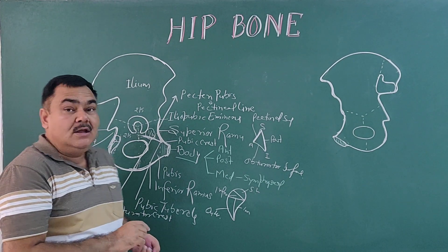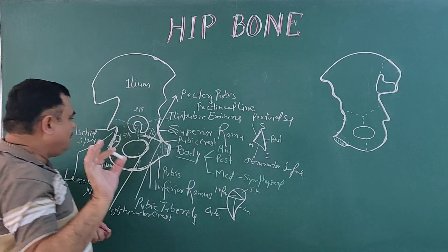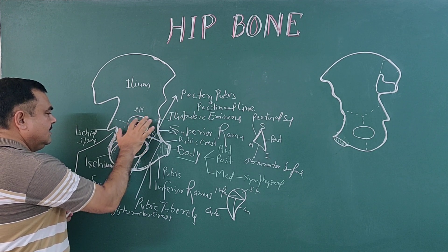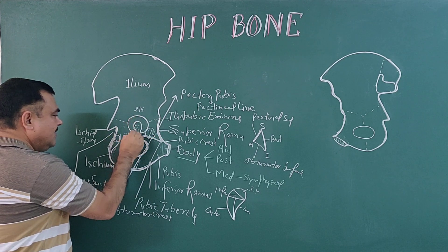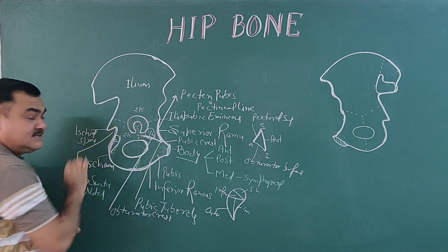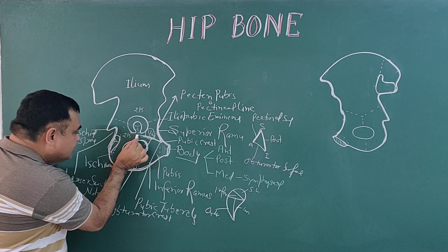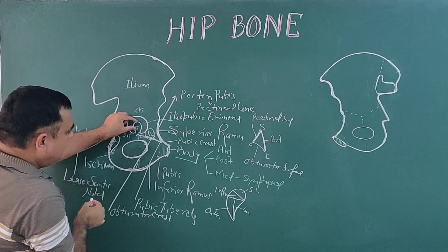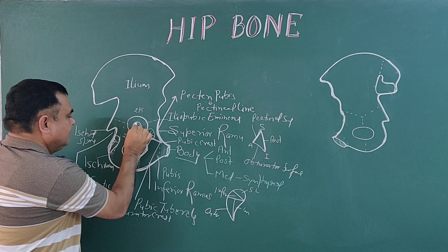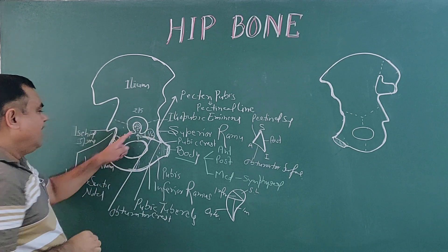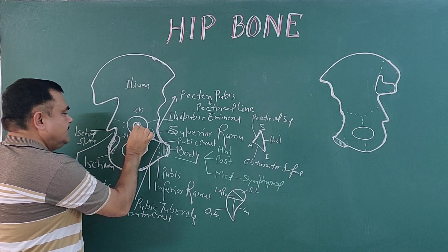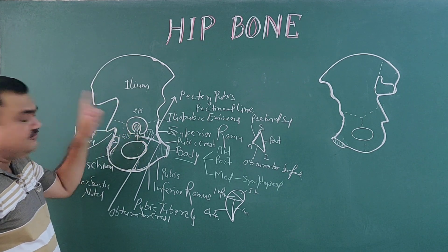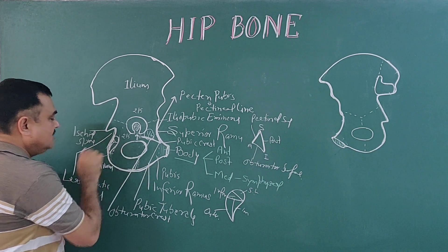Now the acetabulum. This is the articular surface — it has a horse-shoe shaped articular surface, covered by hyaline cartilage. Here is the acetabular notch, and here is a depression — this is the acetabular fossa.